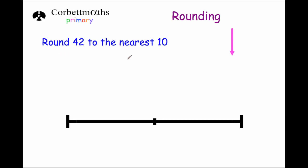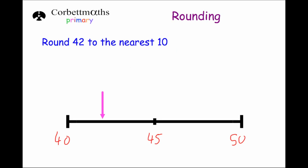So our first question says round 42 to the nearest ten. Well, 42 is in between 40 and 50 — those are the multiples of ten either side of 42, and in the middle is 45. If we place 42 on the number line, 42 would be down here somewhere, which means 42 is closer to 40 than it is to 50. So the answer would be 40.